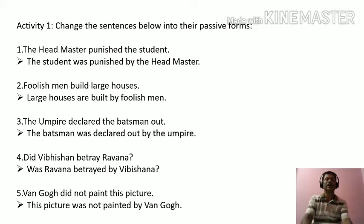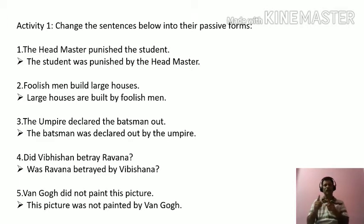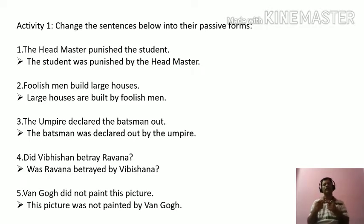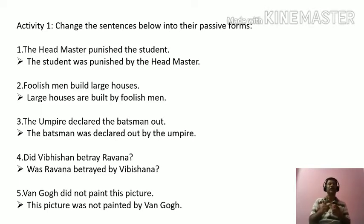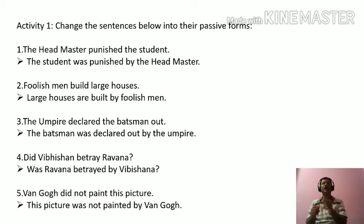Then the third sentence: 'The umpire declared the batsman out.' Here 'the umpire' is the subject and 'declared' is V2, so this is simple past active. Applying the simple past passive rule: putting a whom question — 'Whom did the umpire declare out?' — the answer is 'the batsman'. So 'the batsman' becomes the subject of passive. As it is singular, it takes 'was'. V3 of 'declare' is 'declared'. Answer: 'The batsman was declared out by the umpire.'